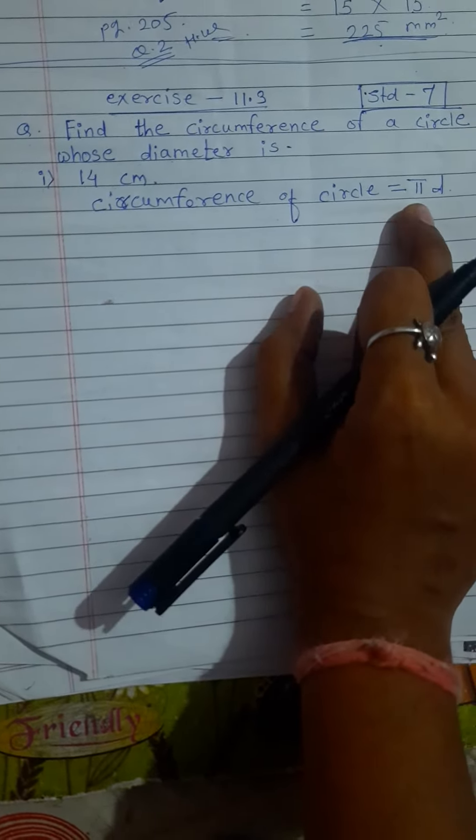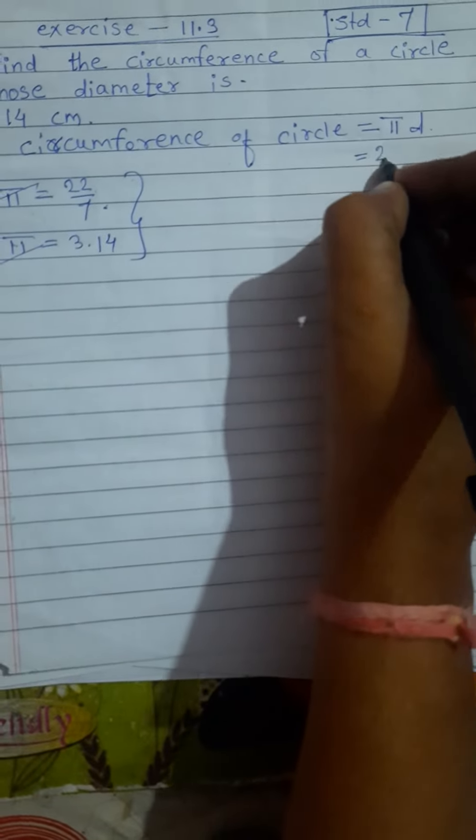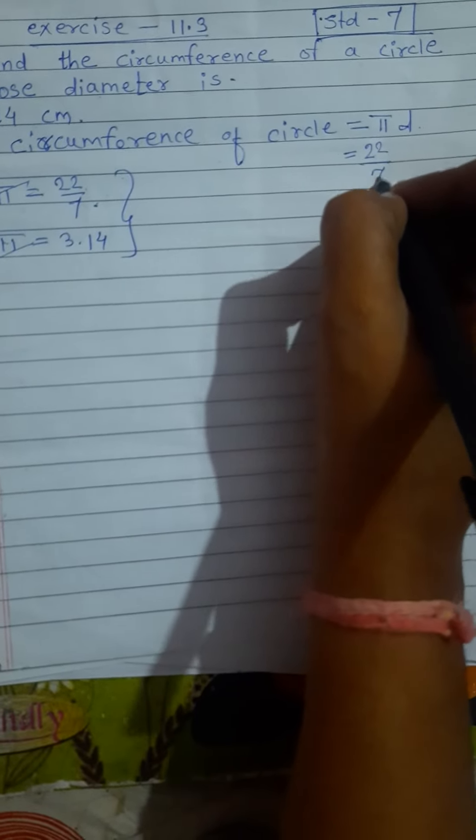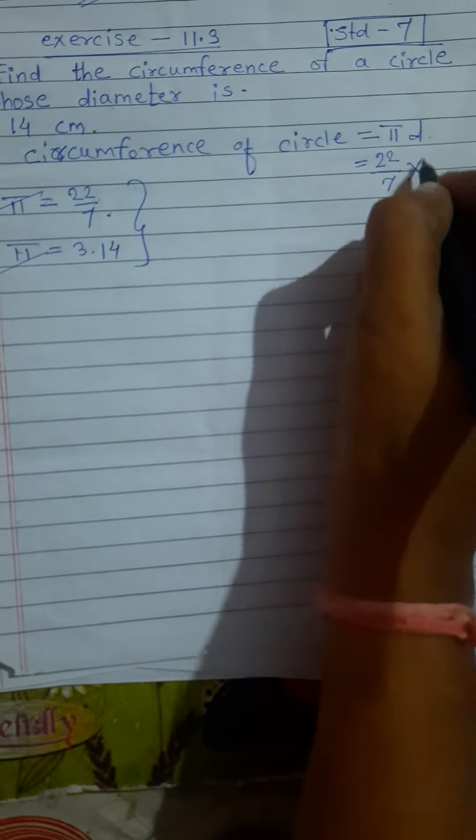Now we just take value on that formula. The value of π, 22 by 7, so write down here 22 by 7 into d. D means diameter. Already they give us diameter of circle is equal to 14, so write down here diameter is 14.